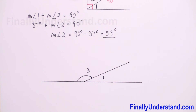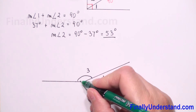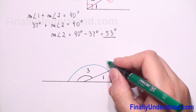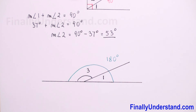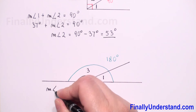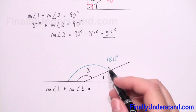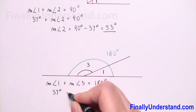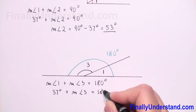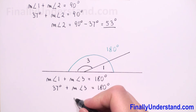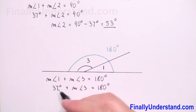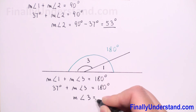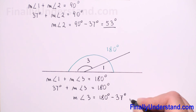When finding the supplement, the total must be 180 degrees. We can write the equation: measure of angle one plus measure of angle three equals 180 degrees. We know the measure of angle one is 37 degrees. Moving 37 to the right side, we get measure of angle three equals 180 minus 37 degrees, which equals 143 degrees.